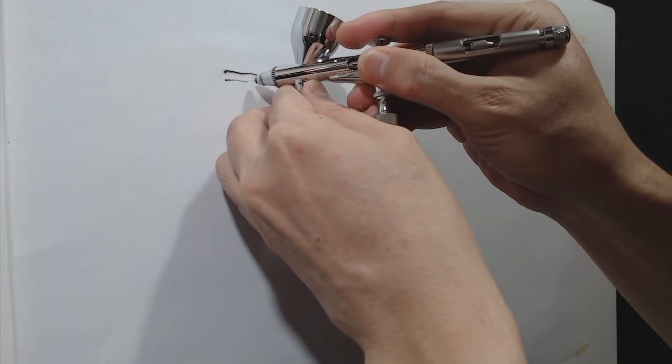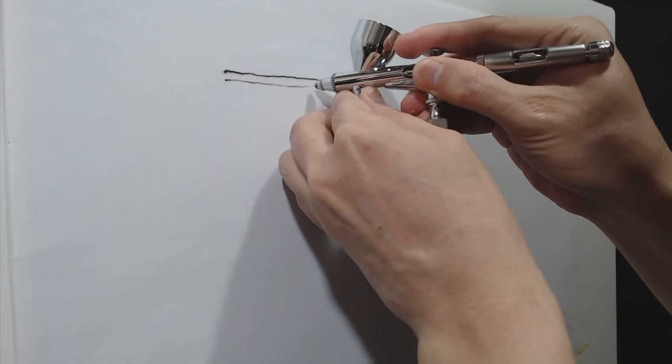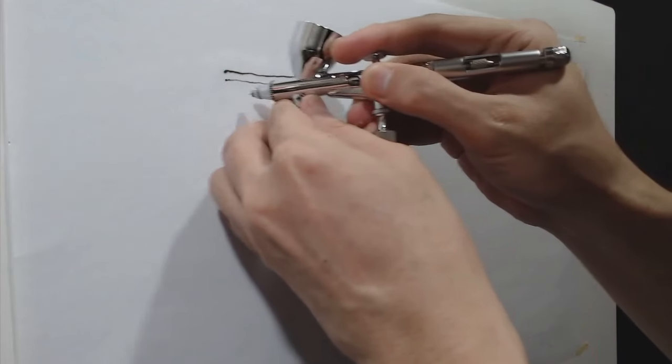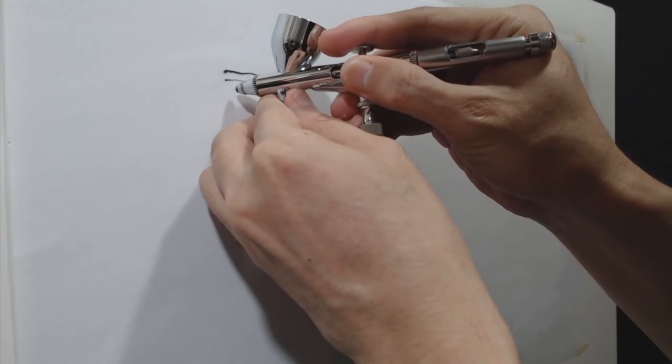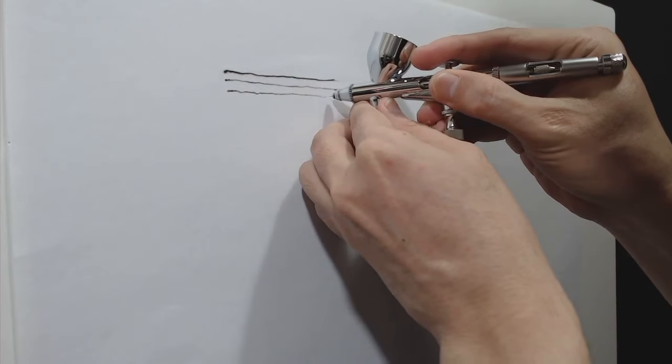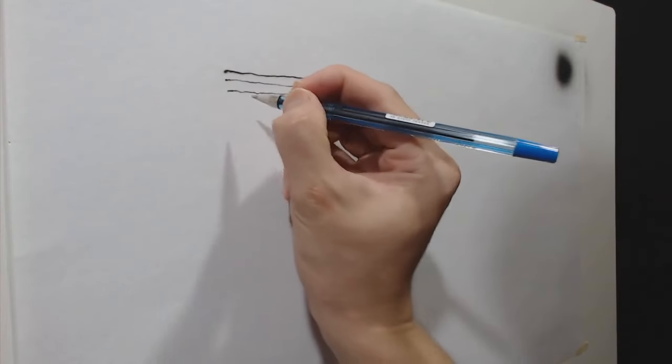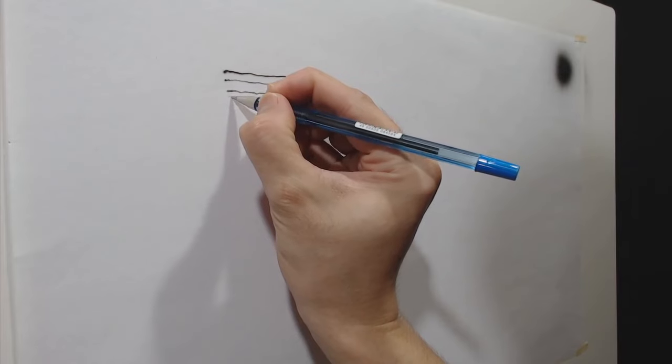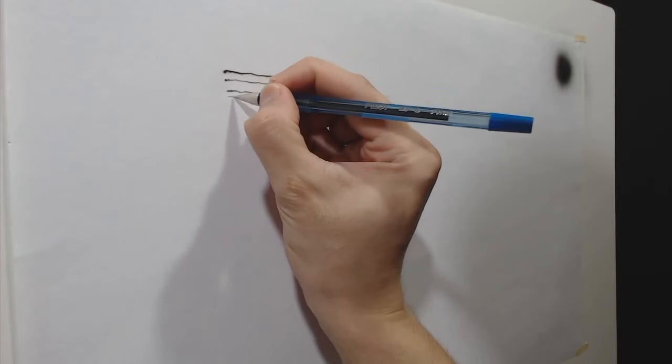The airbrush can spray the paint but I have to pull the trigger almost fully. The first line is the thickest and I'm trying to spray finer as I'm doing the second and third line. As you can see, the lines have inconsistency, so obviously we cannot use the paint directly from the bottle for detailing.